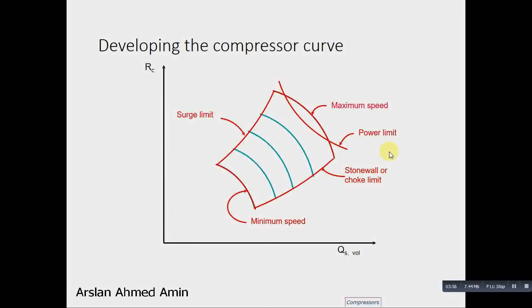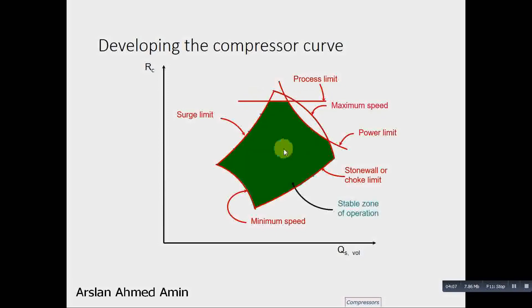And this is the process limit that this compression, this pressure ratio must not be exceeded. So this is the safe region where we want our compressor to continue. Our main purpose would be to run the compressor in this region. And to achieve this, we use the anti-surge control system.